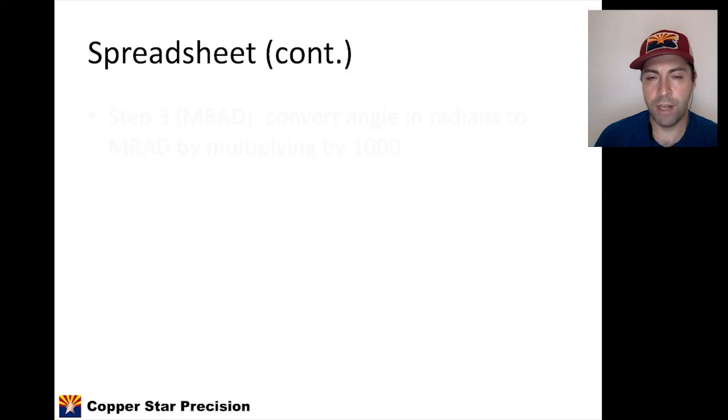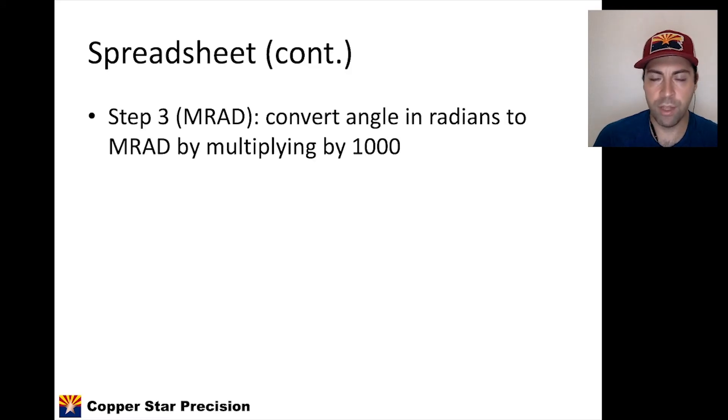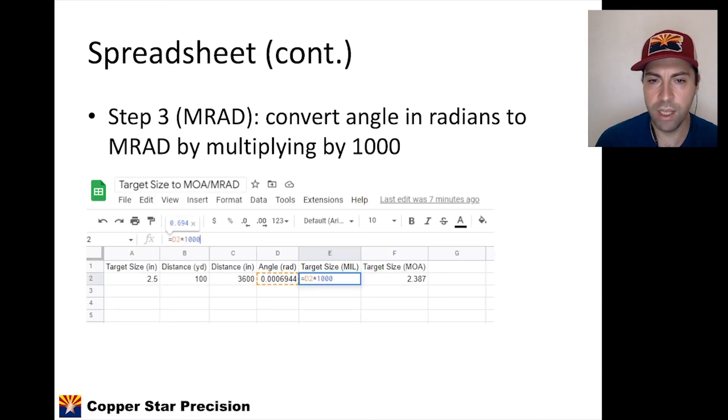To get to MRAD, it's super easy because the angle that we got in the previous step is already in radians. We just have to convert to milliradians. There's 1,000 milliradians in a radian, so we just multiply by 1,000. So that's this cell here, cell E. Take the previous cell, multiply it by 1,000, and 0.694 is that target size in mils, milliradians.